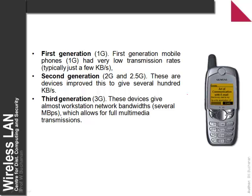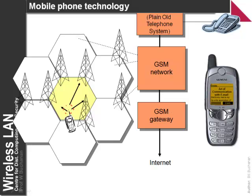With a mobile phone network we've generally gone from first generation phones, which have low transmission speeds, on to 2G, and now on to 3G devices which allow several megabits per second to be transmitted. We have what's called a cellular network, with a number of cells. The mobile phone detects the mast that has the best signal strength and uses that mast to communicate with the rest of the network. A GSM gateway takes us from the mobile phone network on into the internet.